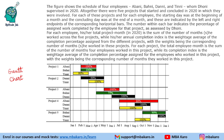In this case, we are given that there are four employees — A, B, D and T — whom Dhonit supervised in 2020. There were five projects that started and concluded in 2020 in which they were involved. For each of these projects and for each employee, the starting date was the beginning of the month and the concluding day was the end of the month. So you just need to count the number of months.